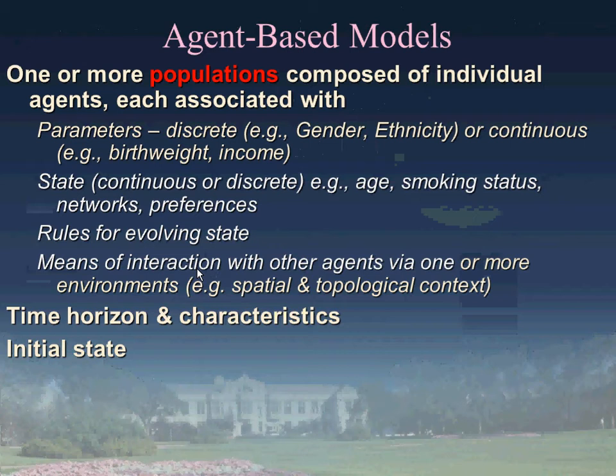Within an agent-based modeling context, we're typically dealing with one or more populations composed of agents depicted individually. Each agent is associated with some parameters—some characteristics that don't change or change only rarely, things like gender or ethnicity. Notably, in contrast to aggregate models, we can represent both discrete aspects of parameters, things like gender and ethnicity, or continuous ones, things like someone's birth weight or income.